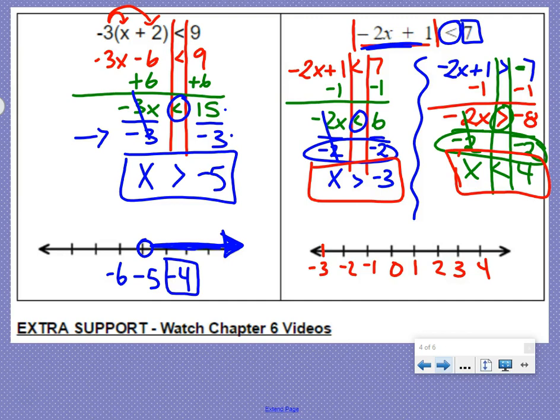Now, we'll start here with x is greater than negative 3. Open circle because there's no equal to piece. And greater than means we're going to the right.